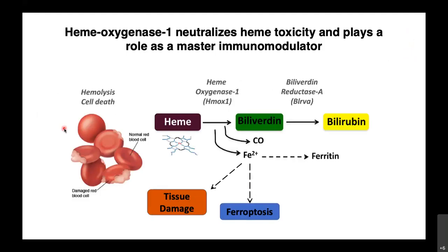Under oxidative stress conditions, such as an inflammatory reaction, that can result in damage or hemolysis of extravascular RBCs. This damage and cell death might release hemoglobin into the tissue, which contains heme compounds that can be toxic to the tissue and promote damage and cell death in a programmed cell death known as ferroptosis. Excess heme in the tissue will trigger a self-stress response, a protective stress response in the tissue to mitigate its toxicity.